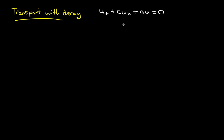We'll start this video by talking about the transport equation with decay. I promised I wasn't going to talk about the transport equation anymore, but I'm going to add an extra term to it. So here's the transport equation, ut plus cux, and I add a term au. This gives me a different equation, and I'd like to investigate what this equation describes.